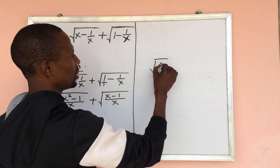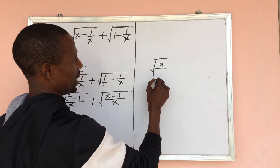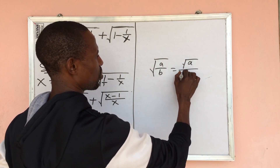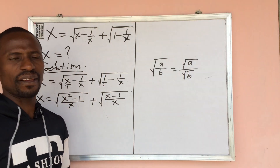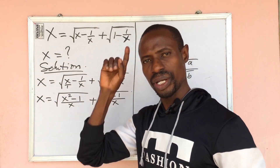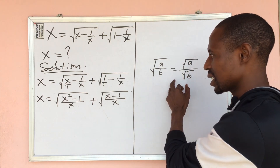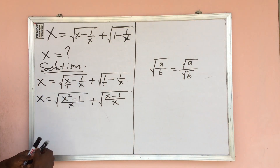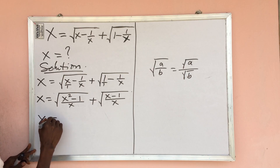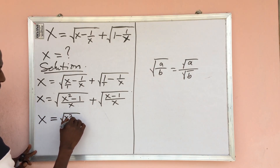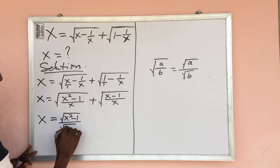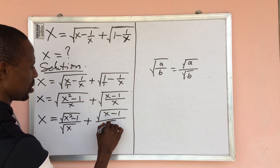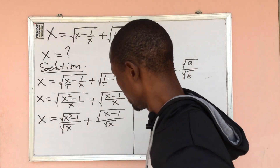Now we proceed according to the rule of surds: the square root of a all over b equals the square root of a all over the square root of b. I produced a video on the rules of surds which covers this rule as well. From here we can rewrite the whole expression as x equal to the square root of x squared minus 1, all over the square root of x.